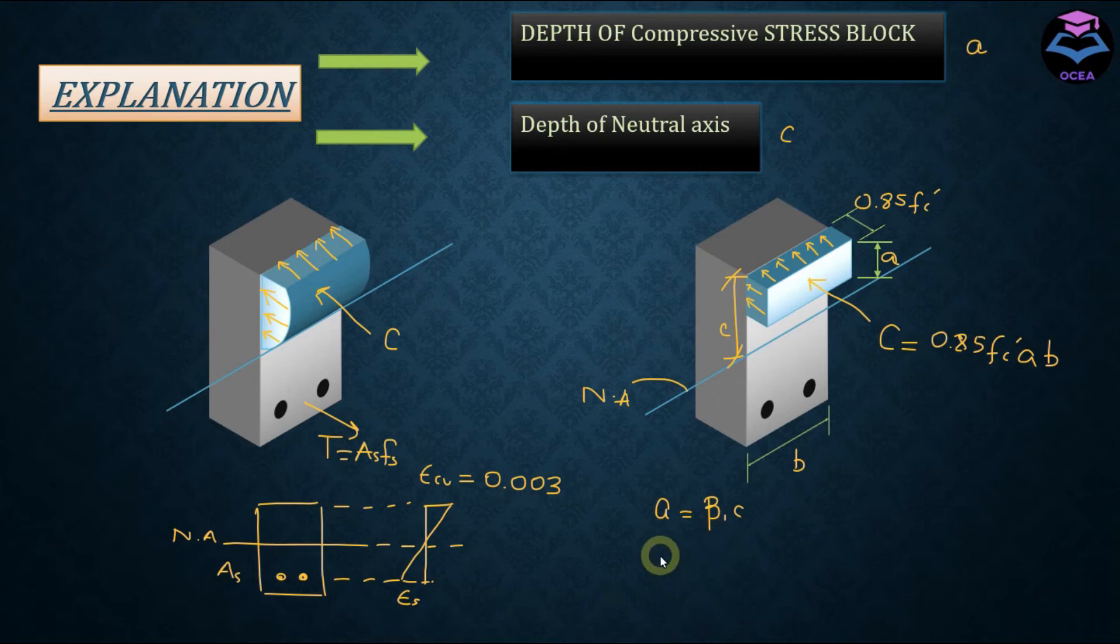This beta 1 parameter here is dependent upon the value of Fc prime. So if Fc prime is less than equal to 4000 psi, beta 1 is equal to 0.85. And now if this Fc prime increases by 1000 psi, this beta factor would decrease by 0.05. For instance, if Fc prime is equal to 5000 psi, beta 1 would be equal to 0.80. And if this becomes 6000 psi, this would be 0.75. The minimum value of beta is equal to 0.65. Okay, now let's proceed with calculation.